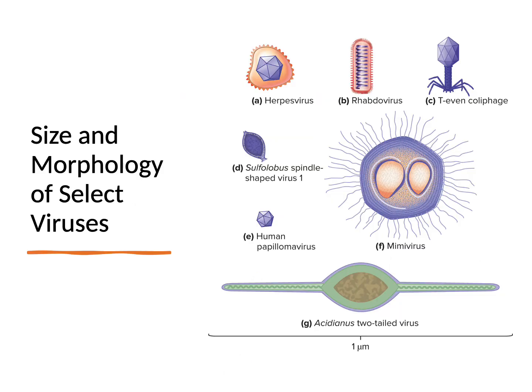Viruses come in different sizes and morphology, as we saw in the first intro slide. All the viruses shown are scaled to the same proportion, so you can see the size difference — for example, human papillomavirus versus mimivirus. You can also see the different structures, including the T-even bacteriophage that infects bacteria.